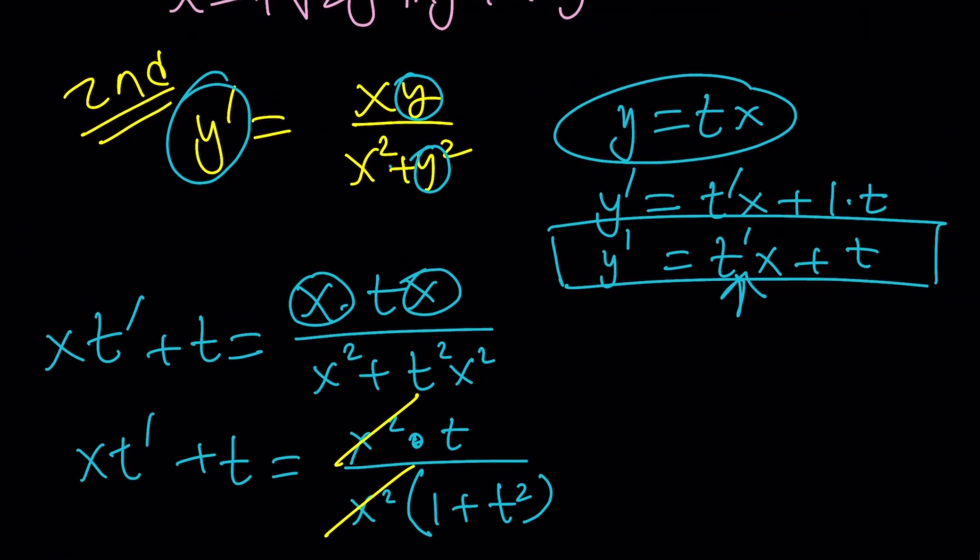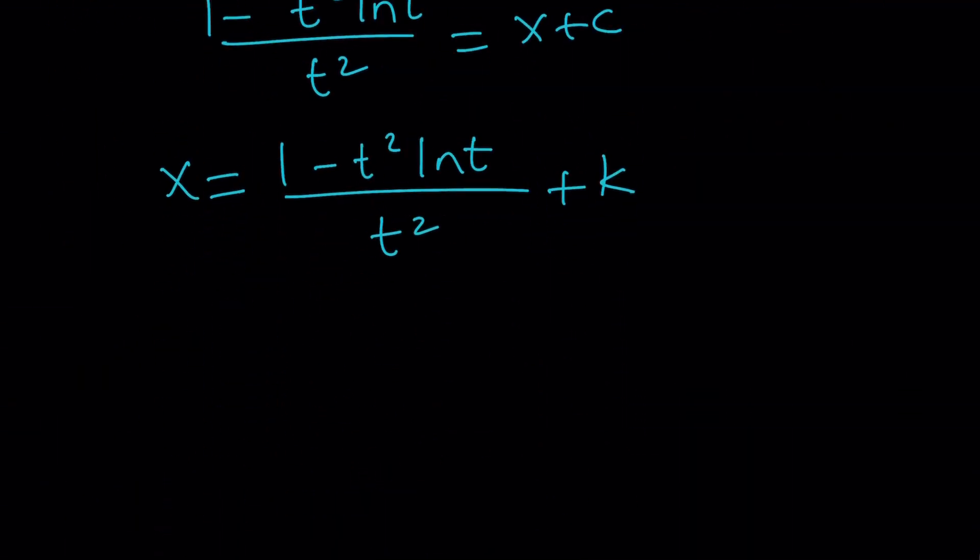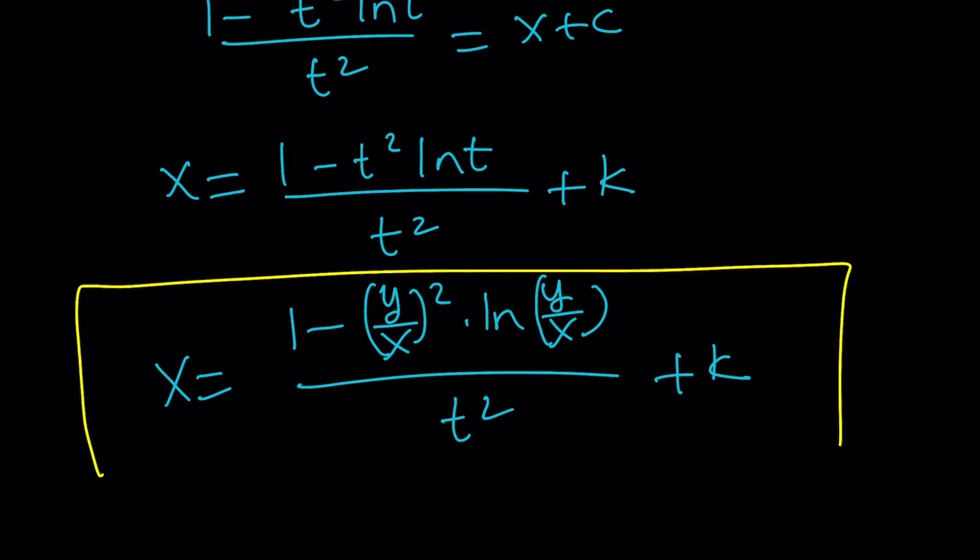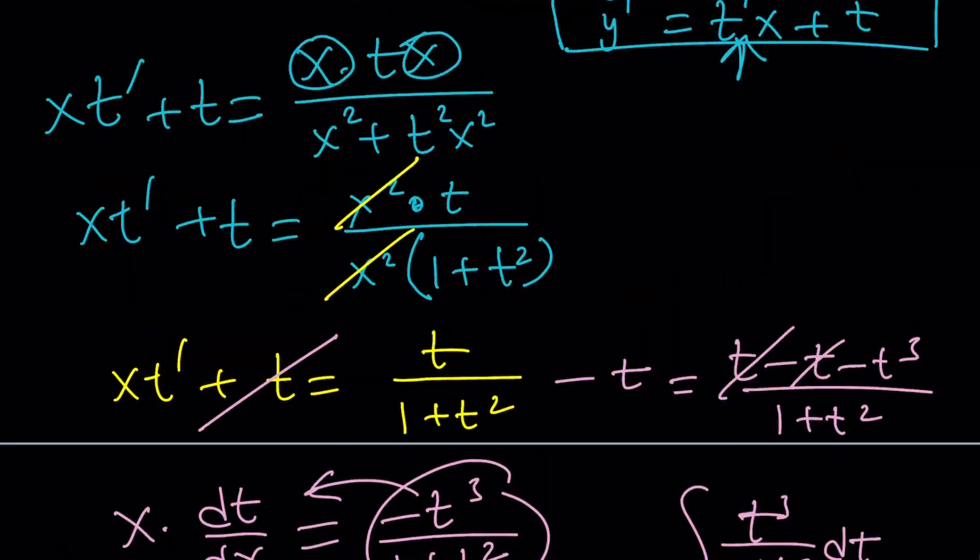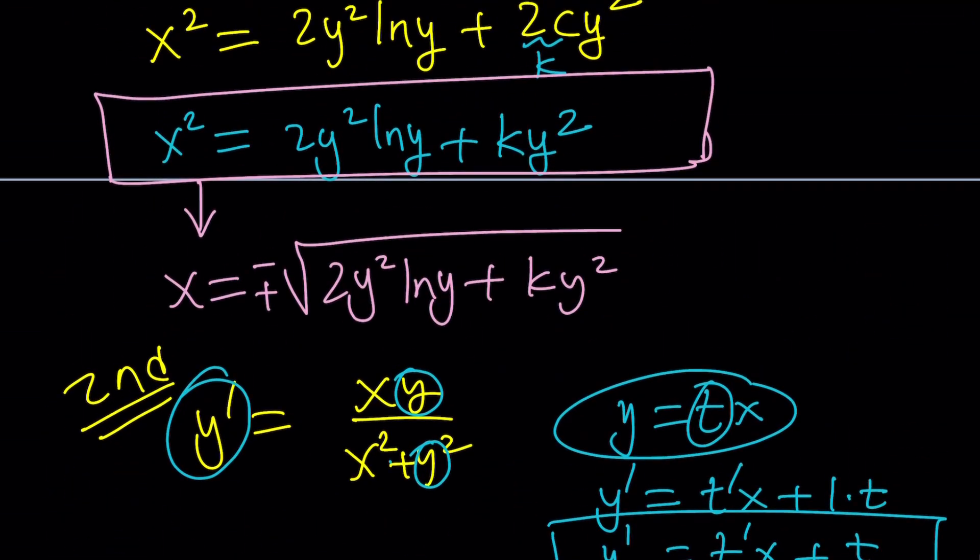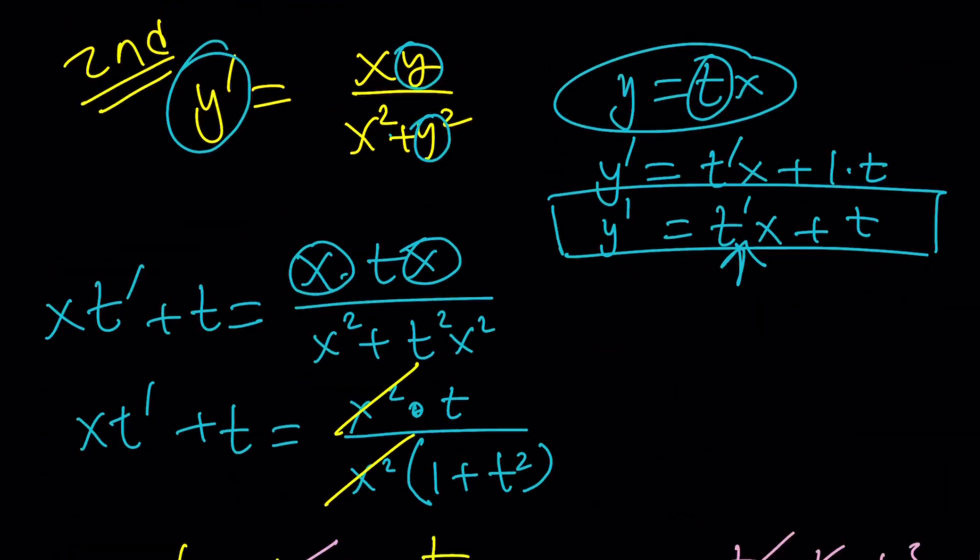And now we can replace t with what? t is y/x, right? Because y = tx. So t is y/x. (y/x)² times ln(y/x) divided by t² plus k. Now, I want you to go ahead and compare this to the result from the first method. Do you think they're going to be the same? And how? In which ways?